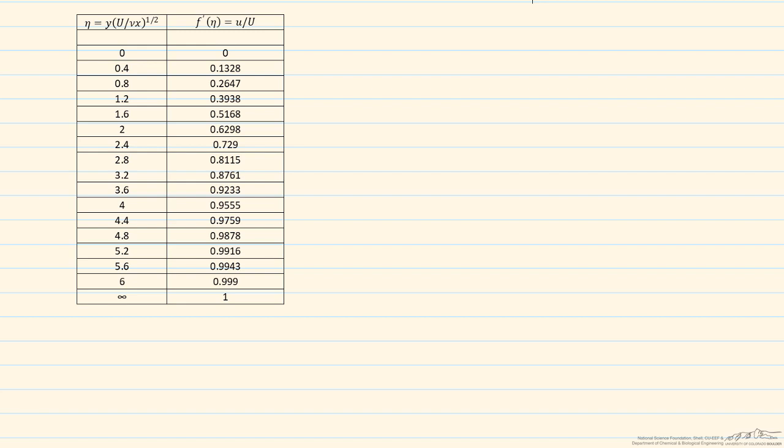Note that little u over big U is approximately 0.99 when eta equals 5. This is important because that's the definition of the boundary layer thickness.